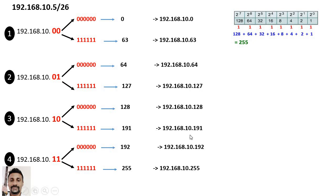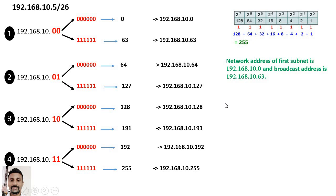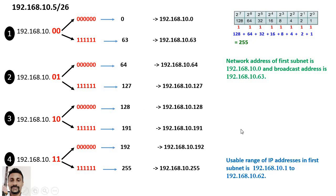We can find the network and broadcast addresses as covered in the previous video. There are four subnets, each with a starting and ending address. The starting address is the network address and the ending address is the broadcast address. Since network and broadcast addresses cannot be assigned to host computers, the actual number of usable addresses per subnet is 64 minus 2, which is 62.